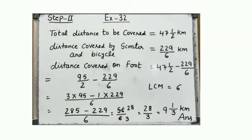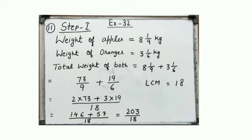Total weight of fruits is given, weight of apples is given, weight of oranges is given, and you have to find the weight of pears. So it is also a two-step word problem. Step 1: weight of apples is 8 1/9 kg, weight of oranges is 3 1/6 kg. Total weight of both = 8 1/9 + 3 1/6.